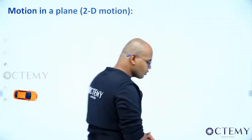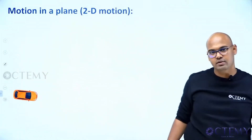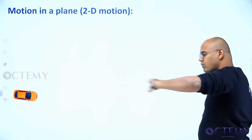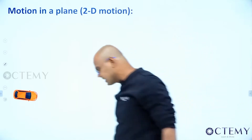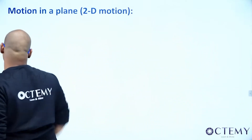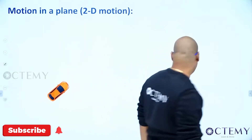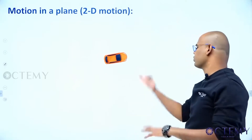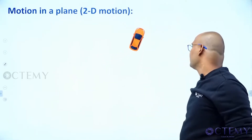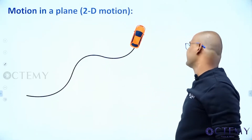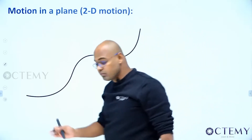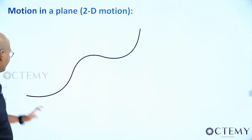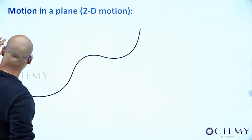Now we'll start with motion in a plane. If the body is moving not in a straight line — till now it was moving along a straight line — now it has started moving in a plane. Let's say I'm seeing the top view of a car going somewhere in some fashion like that. Now I want to analyze the motion of the car — how to solve this 2D problem.